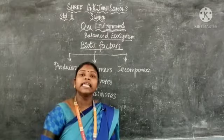Now we are going to classify the biotic factors into producers, consumers, and decomposers. First one is fungi. Fungi is a biotic factor. I already told you that fungi and bacteria are decomposers. Fungi feed on dead plants and animals and cannot make their own food, so it is a decomposer.